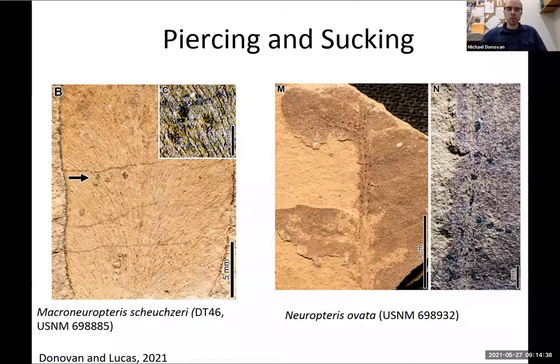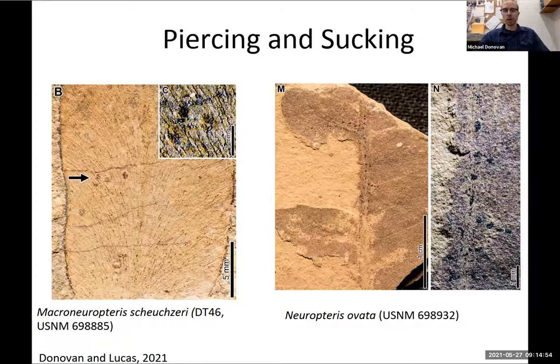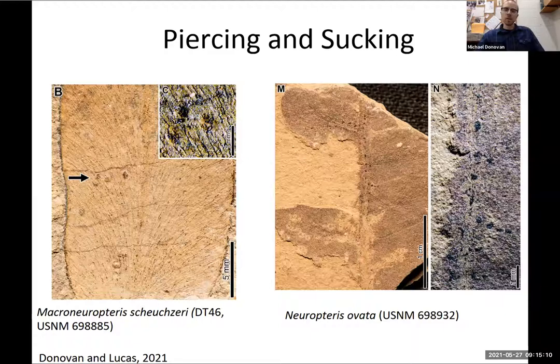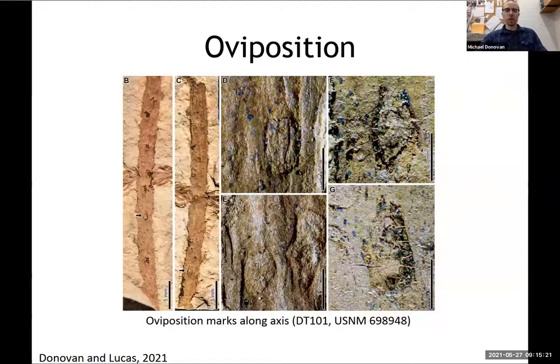We also have possible piercing and sucking. Piercing and sucking can occur on compression floras, but it's often a little more difficult to interpret than in the coal ball flora. The specimens do have the overall features of piercing and sucking — there are small marks where probably a Palaeodictyopteroid insect could have pierced the tissue and sucked out some fluid. If you look at the pictures on the right, these are along the midveins of the leaf. This is actually a pretty common behavior in some modern piercing-and-sucking hemipteroid insects.